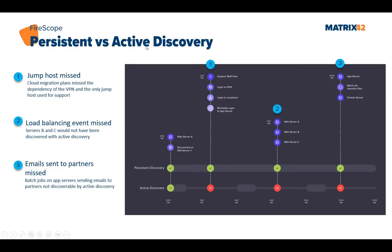We have traditional active discovery — the inventory scan that runs once a day, either through a remote connection to the target system or through an agent installed on it. But sometimes we cannot get everything we need with just active discovery, and that's why we need persistent discovery. For example, web servers running on an ESXi hypervisor are covered by active discovery because they usually run 24x7, and also covered by persistent discovery which continuously monitors network traffic to detect changes.